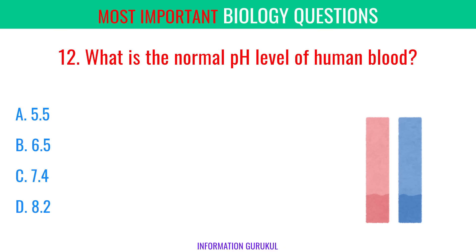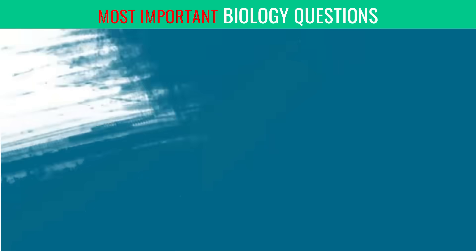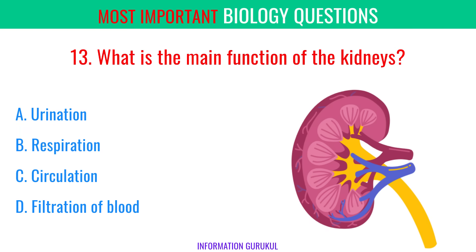What is the normal pH level of human blood? What is the main function of the kidneys? Filtration of blood.